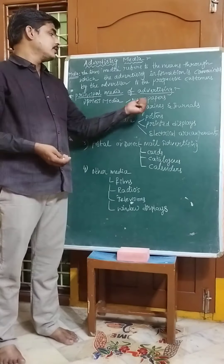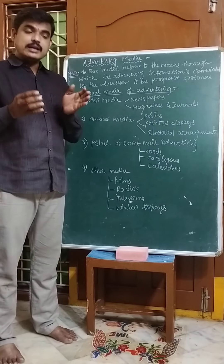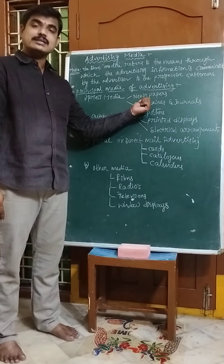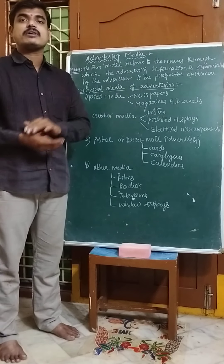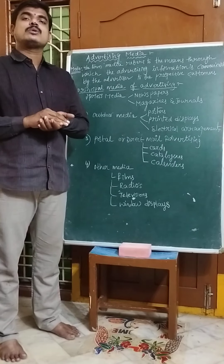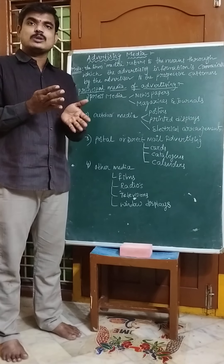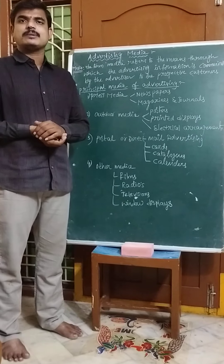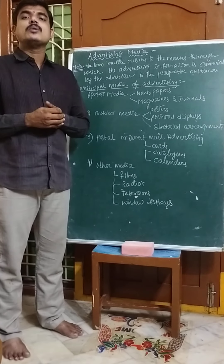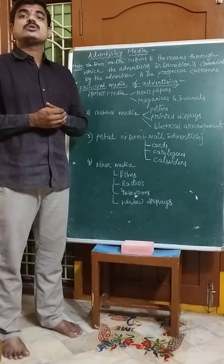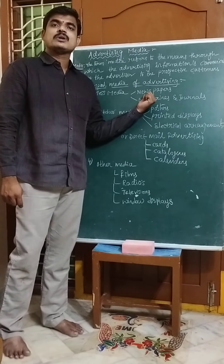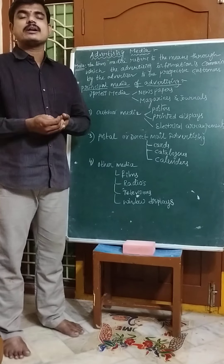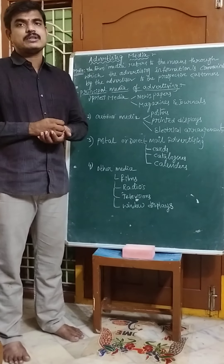The first type of press media is newspapers. If you want to communicate regarding a particular product to the consumer, it is a very good resource in the hands of the advertiser. If you are giving an ad in that newspaper, most of the people may see that ad. If you go for the advantage, most of the readers can make use of newspapers.